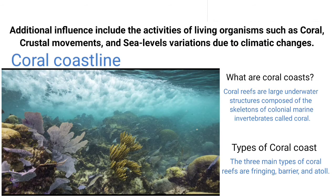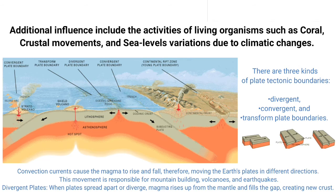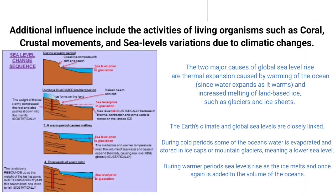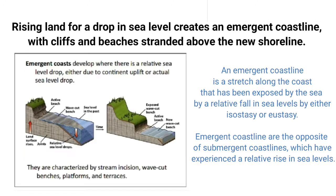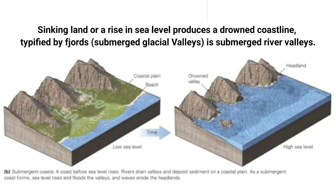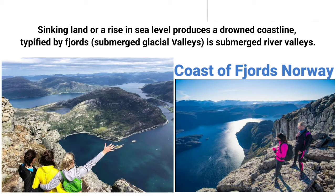Additional influences include the activities of living organisms, such as coral, crustal movement and sea level variation due to climate changes. Rising land or a drop in sea level creates an emergent coastline with cliffs and beaches stranded above the new shoreline. Shrinking land or a rise in sea level produce a drowned coastline, typified by fjords or submerged river valleys.